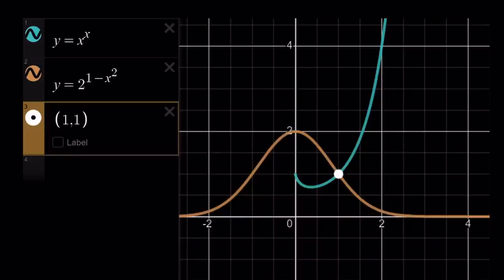And our x to the power x is only defined for positive numbers. It's not even defined for 0. So, that should be an open dot. And, which means this is the only solution. x equals 1.